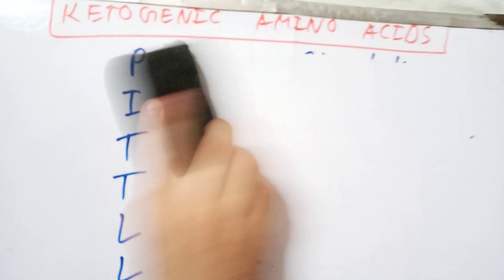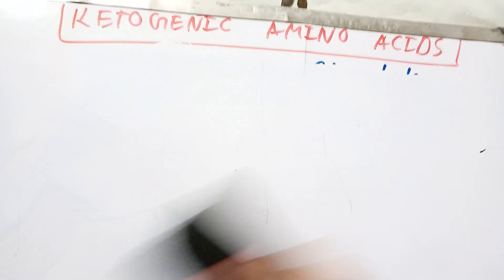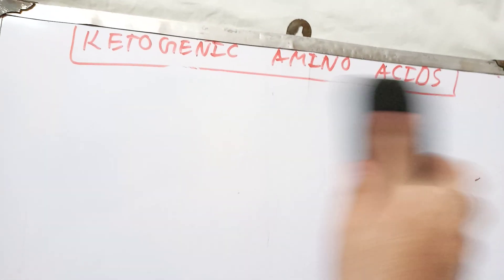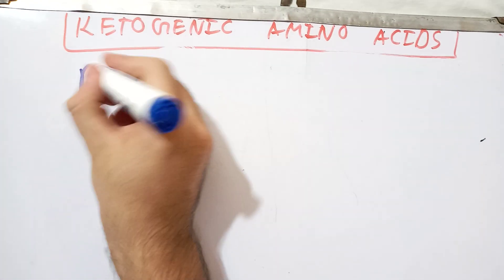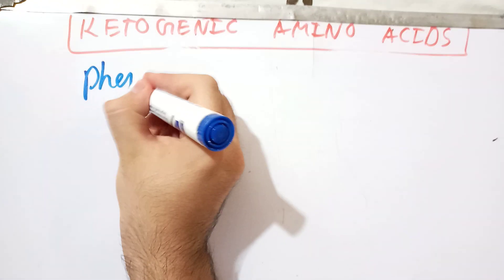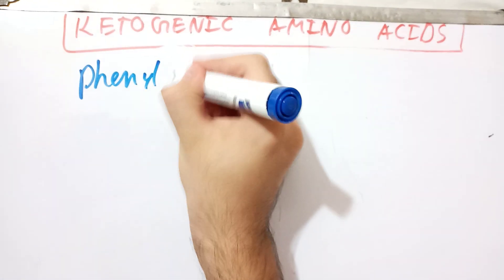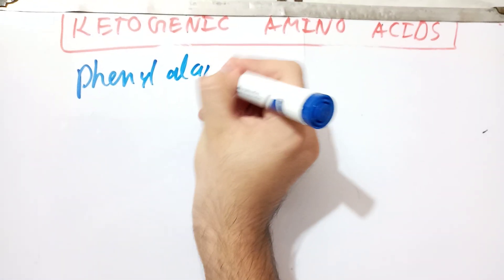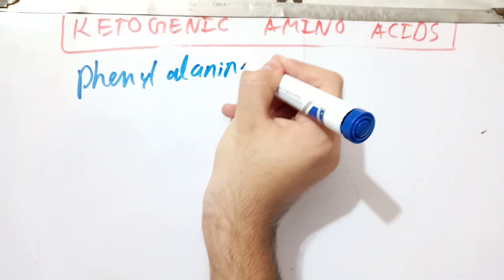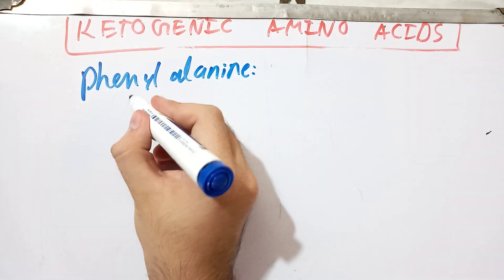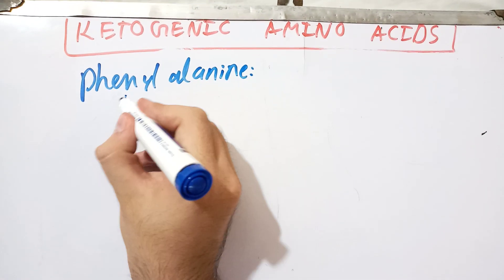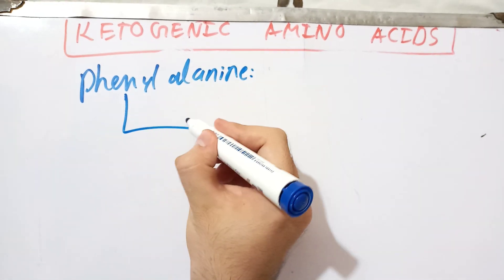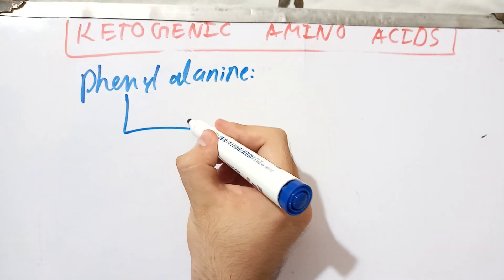First of all we will talk about phenylalanine — how phenylalanine leads to the formation of ketone bodies. As I told you in the previous lecture, phenylalanine is converted first into...